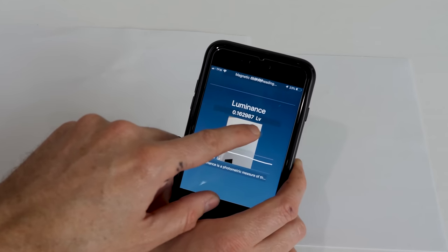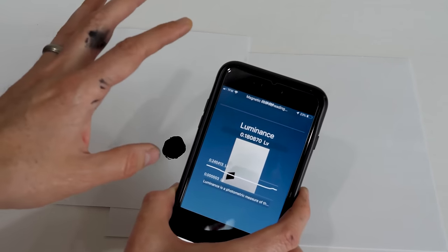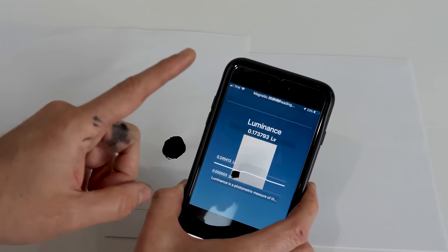This unit here is candelas per meter squared. And for reference, a candle gives off around one candela.